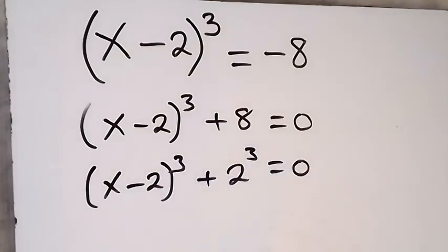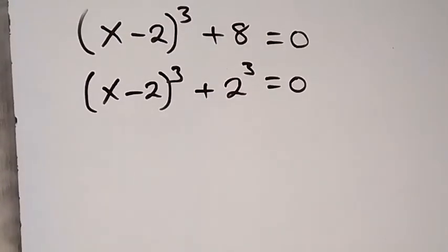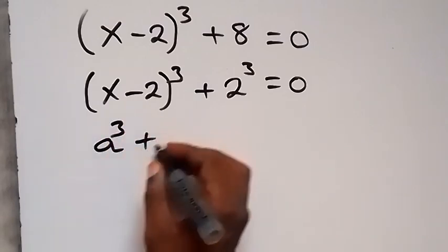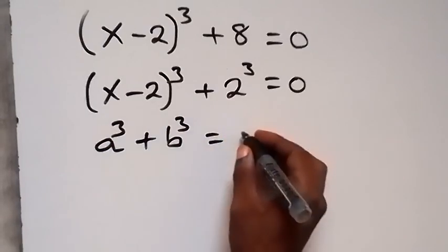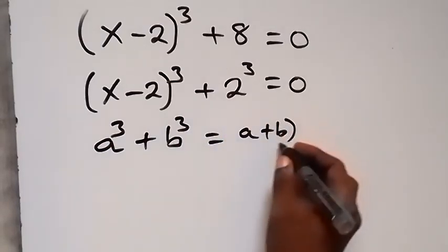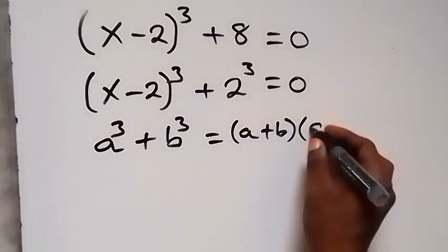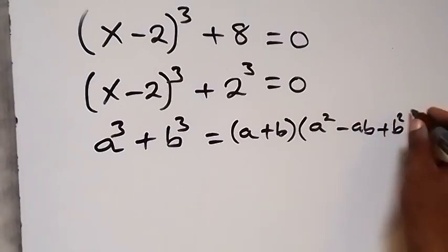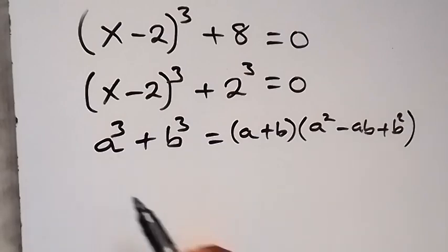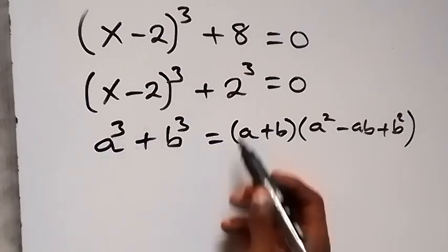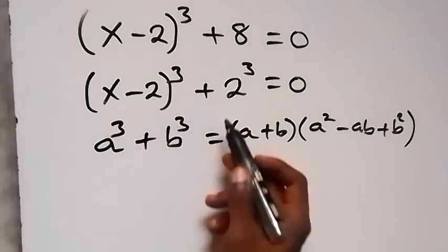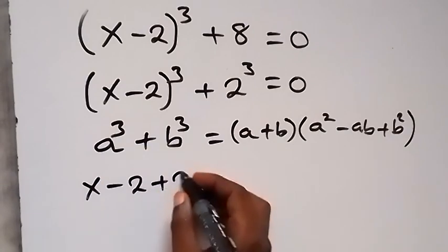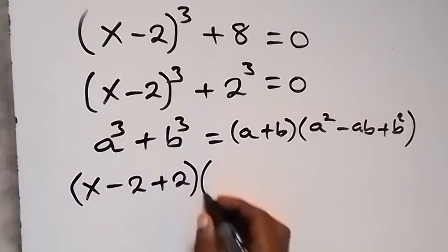Here we have the sum of two cubes. When we use the identity: a³ + b³ = (a + b)(a² - ab + b²). When we apply this here, a is taken as x minus 2 and b is taken as 2. So this becomes (x - 2 + 2) into bracket...